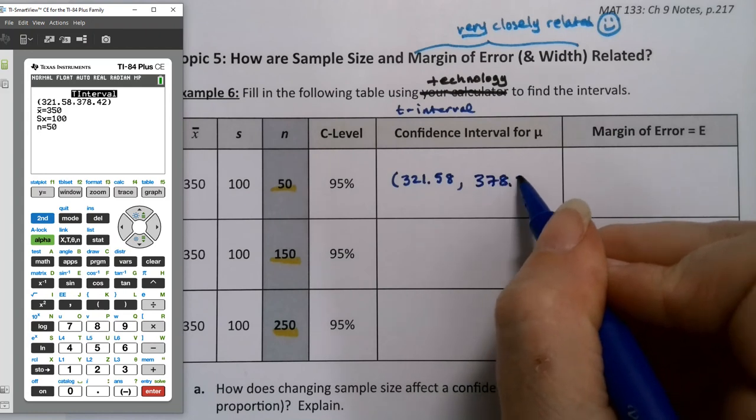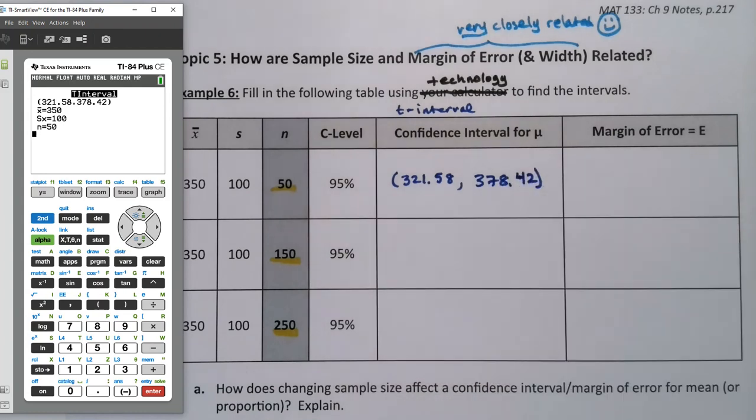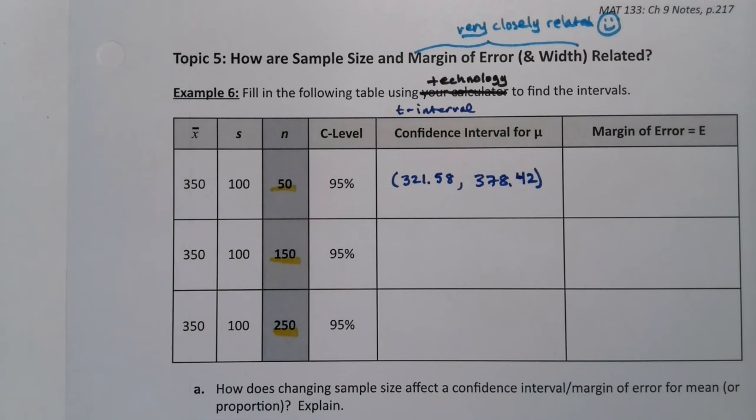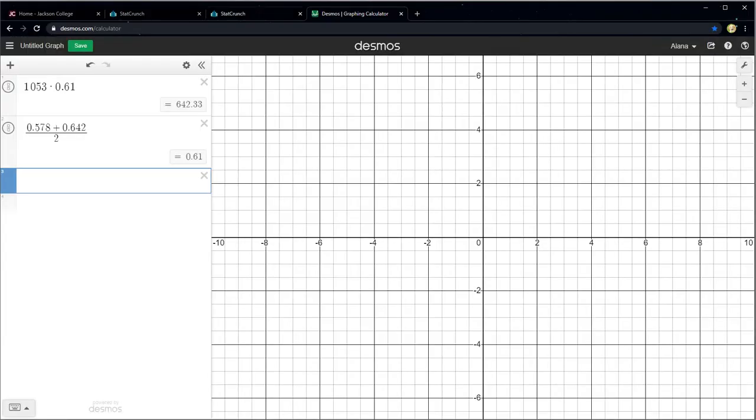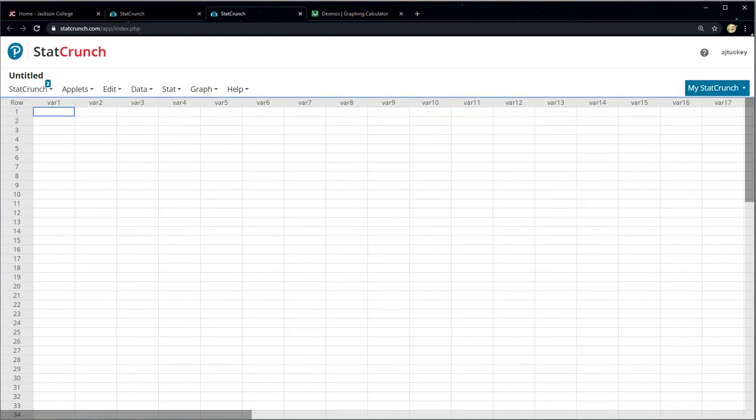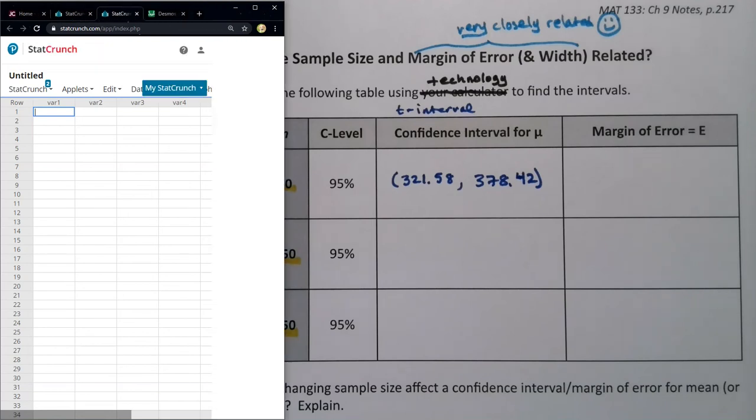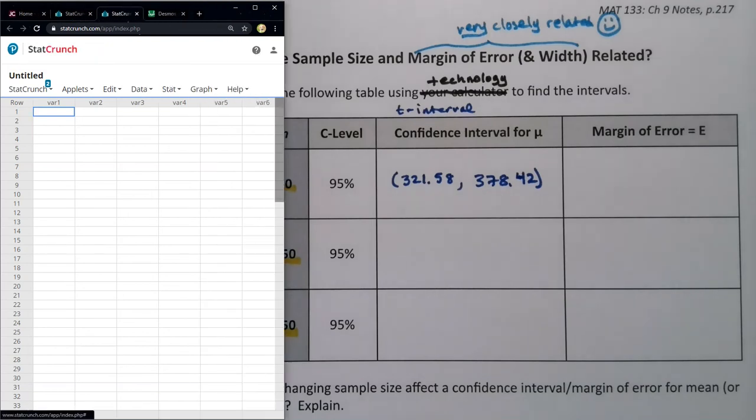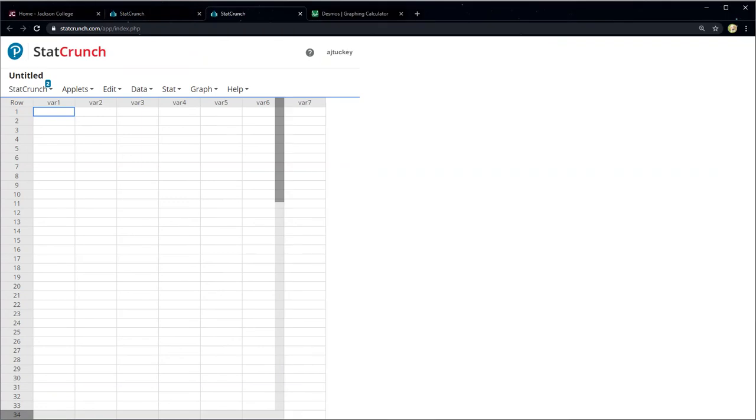So 378.42. Now if you want to continue with the calculator, press stat, tests, number eight, and then change that sample size to 150. And then repeat. Go down to calculate and press enter. But I also want to show you how to do this in StatCrunch, which is probably what more of you are going to actually do. So let me go to StatCrunch really quickly. I'm actually going to shrink this window down because we don't need to see all of that. What we need to see is stat. I guess I will leave it big for right now, just so you guys can see it. So stat.